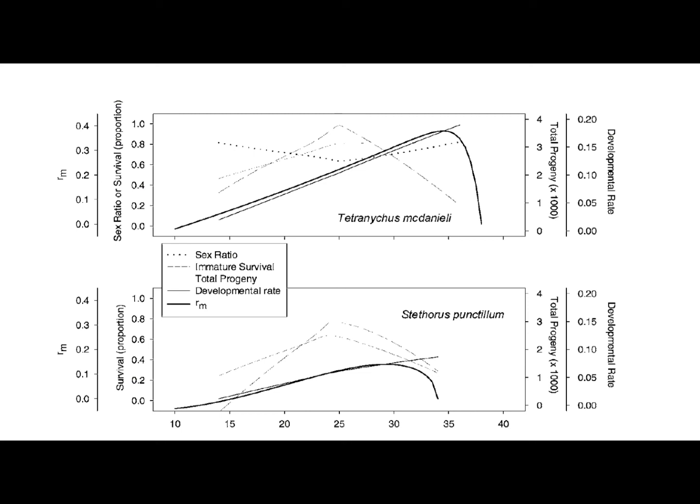The sheer difference in reproduction does not mean that Stethorus punctilum cannot be effective against Tetranichus mcdanieli, but it does mean that control strategy must mitigate this disadvantage. One possibility is to simply increase the inundative application rate, multiplying the gross mortality rate of the prey and equalizing the population growth disparity.